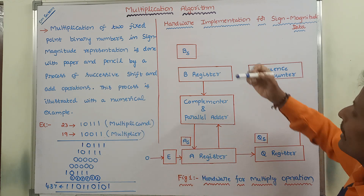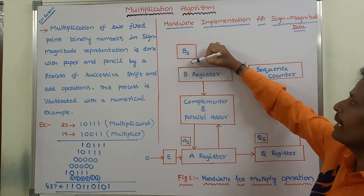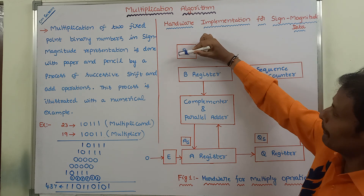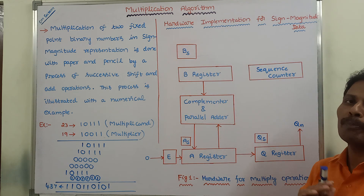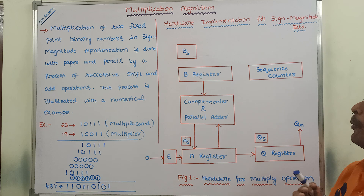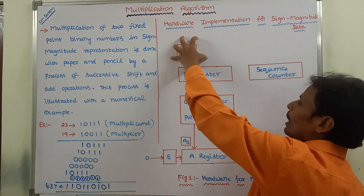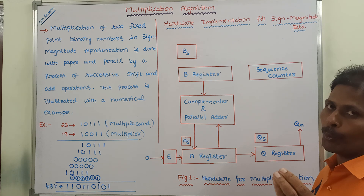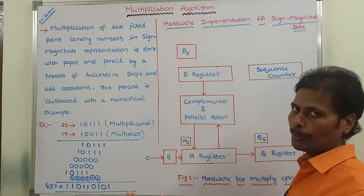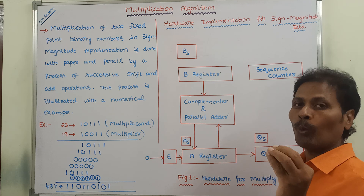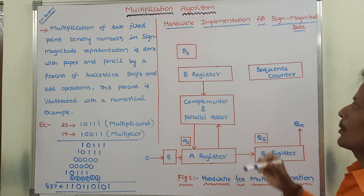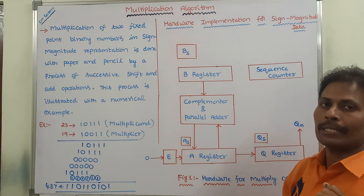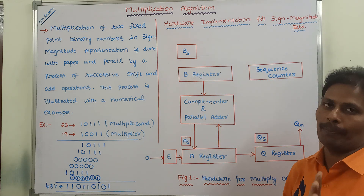In the B register we have to store the multiplicand. Its sign bit is stored in a flip-flop called BS register, which is a one-bit register that can store only the sign bit. A sign bit value of 0 indicates positive and a sign bit value of 1 indicates negative.